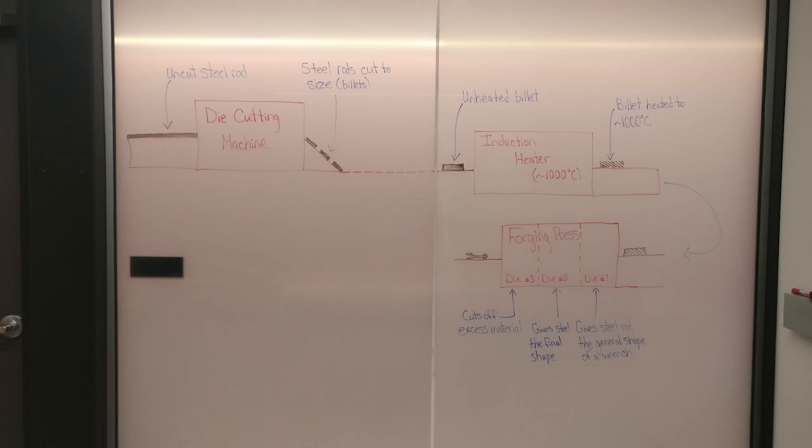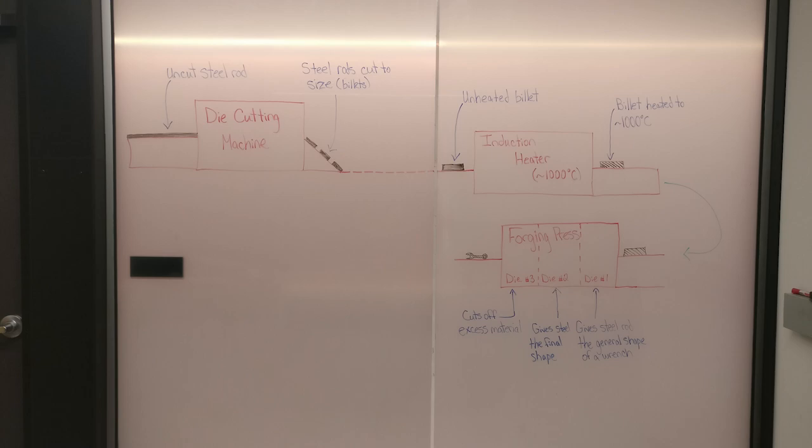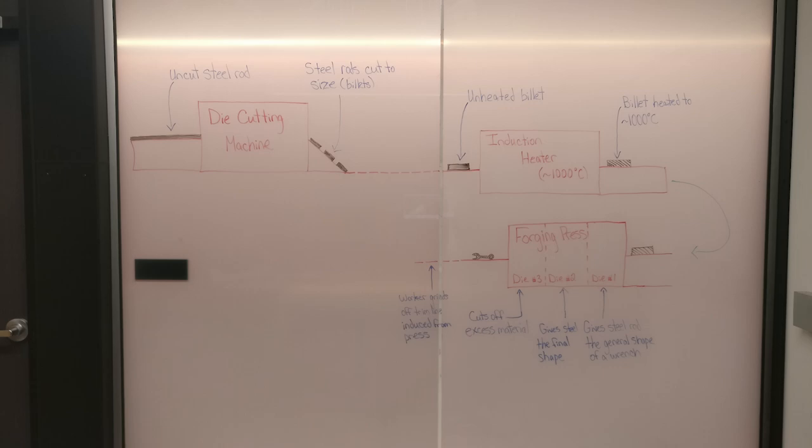The formed wrenches leave the die press, and the worker grinds off the trim line created when the two halves of the forging press clamp together. The wrenches are sent through an etch polishing machine to be cleaned and shined.